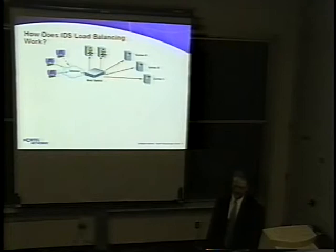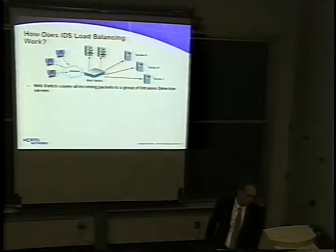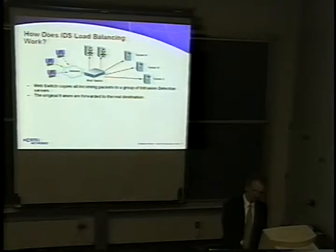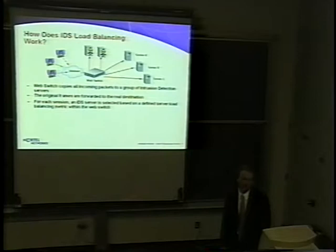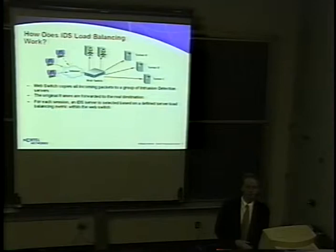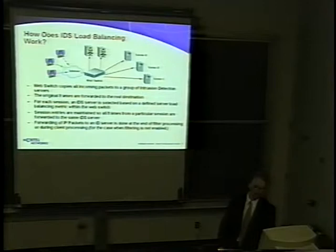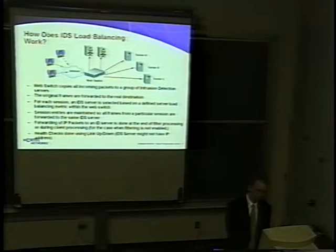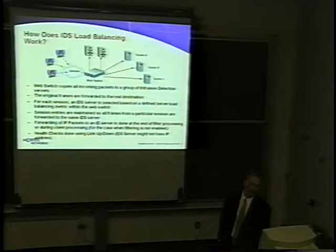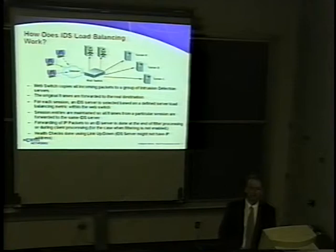Here's a walkthrough of an IDS server load balancing session. A web switch copies all incoming packets to a group of IDS servers, while the original frames are forwarded to their real destination to reduce latency. For each session, the IDS server is selected based on a defined server load balancing metric within the web switch, since it's been performing health checking and performance monitoring on the entire server farm. Session entries are maintained so all frames from a particular session go to the same IDS server. Health checks are constantly performed using link up/link down, or ICMP pings when the IDS server has an IP address.